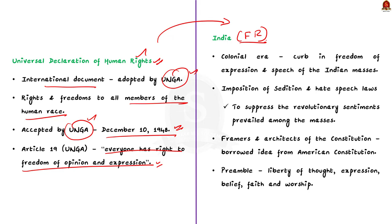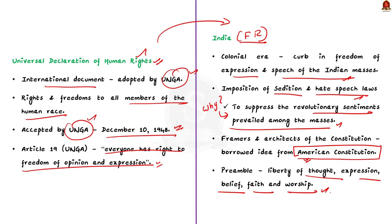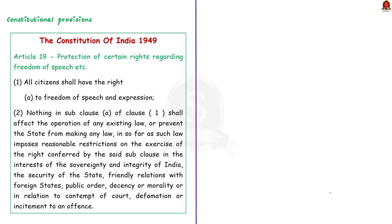This Universal Declaration of Human Rights also inspired India to provide the right to freedom of opinion and expression. Under the colonial era, the liberties of Indians were severely restricted. The British Empire curbed freedom of expression and speech of Indian masses by imposing various laws like the sedition law and hate speech law, in order to suppress revolutionary sentiments. As most constitution makers were freedom fighters, they realized the need for freedom of speech and borrowed the idea from the American Constitution. In India, the preamble itself ensures all citizens liberty of thought, expression, belief, faith and worship.